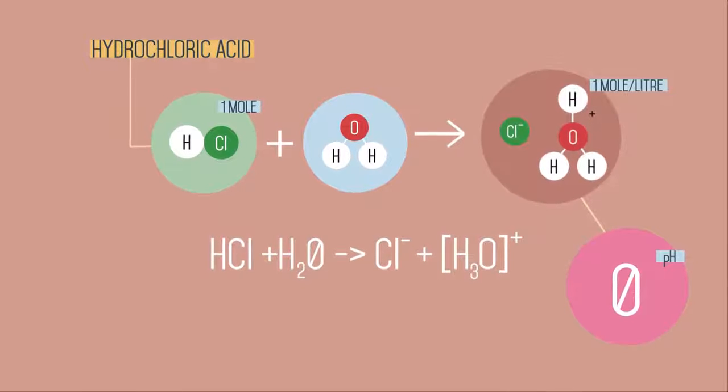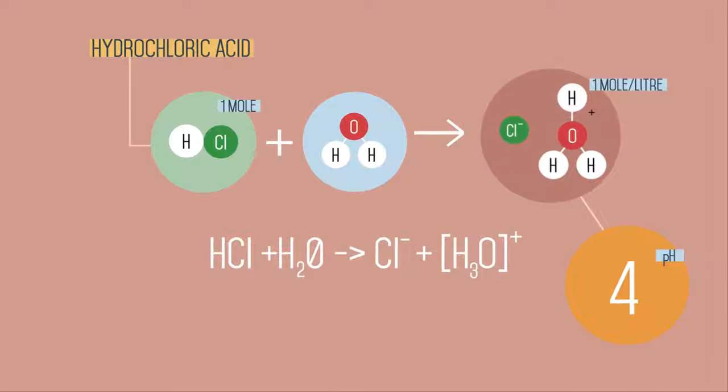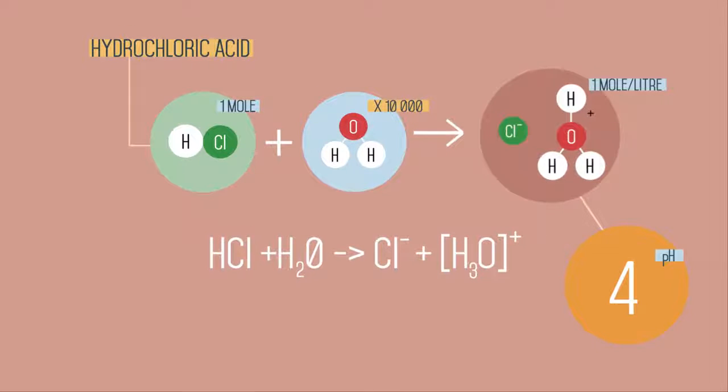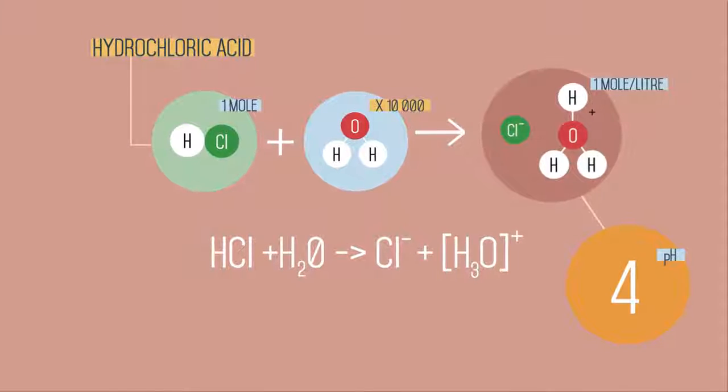To get a solution of for example pH 4 you need to dilute this with 10,000 times its volume of water. We still have a strong acid but it is very dilute.